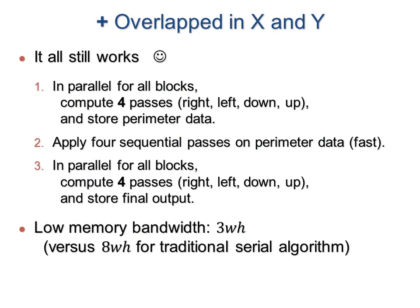As we saw in the summed area tables, overlapping can be applied across dimensions as well. Therefore, we can perform all four recursive filter passes - right, left, down, up - using just two block parallel passes. Overall, the image data is read only twice and written just once. And this significantly reduces memory bandwidth compared to the traditional serial algorithm.